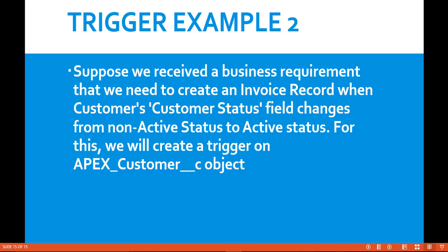If the previous status of the customer was pending and you changed it to active, in that case I would like to create an invoice record. But not in the scenario where the previous status was active and the new status is also active — I don't want to create an invoice record for that. I want invoice records created only when the customer status changes from non-active to active.